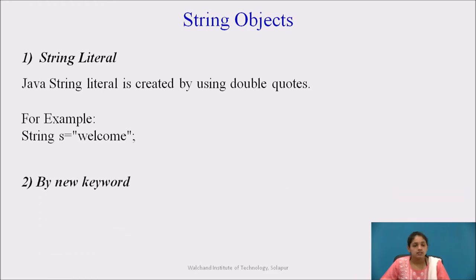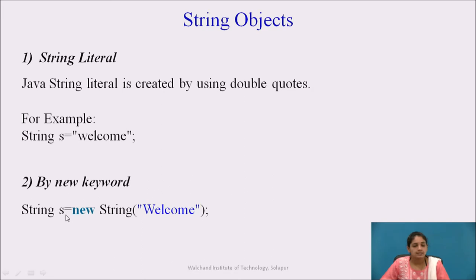The second way is by using the new keyword. The syntax is: String is the data type, s is the object name, equal to the keyword new, followed by the data type String with the value welcome in brackets. So the string welcome is stored in the string object variable s using the new keyword.